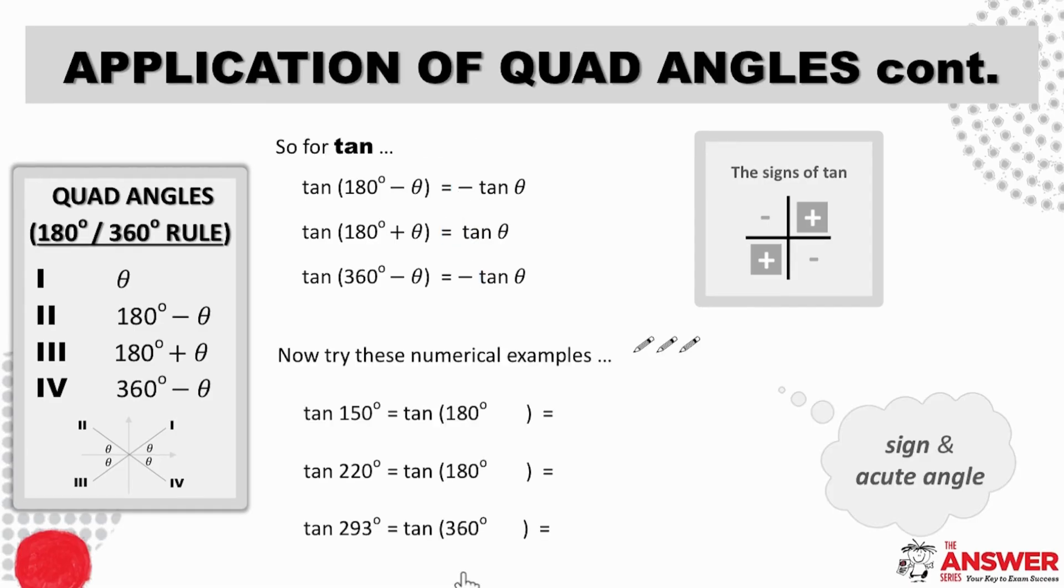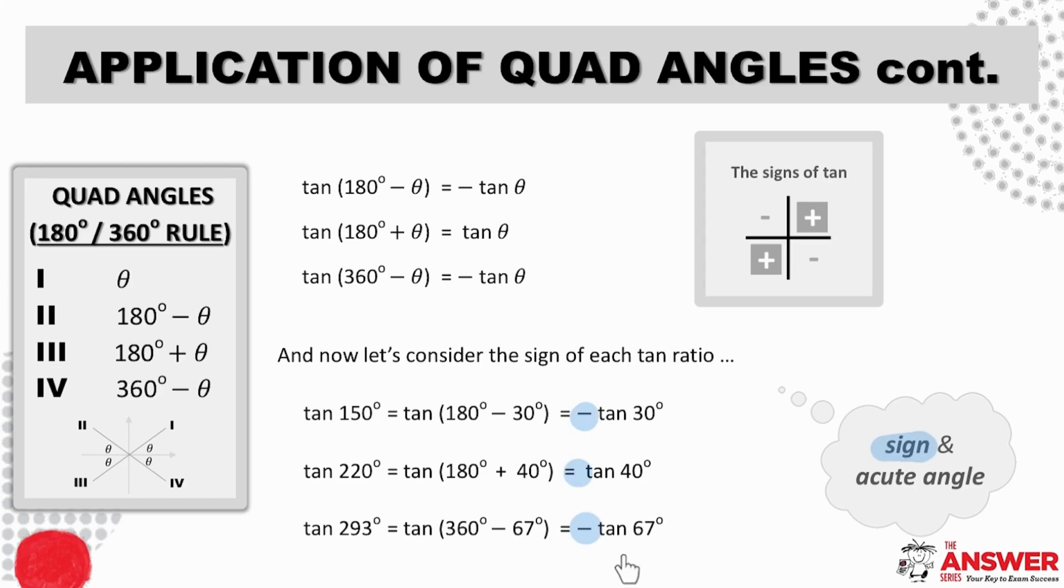Let's try these numerical examples for tan now, remembering the two-fold thinking process for each one. Pause the video to give yourself enough time to do these. Taking a look at the process of reduction one step at a time, here are the acute angles in each case. And here are the signs and the full answers. Did you get these all correct?